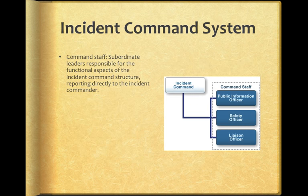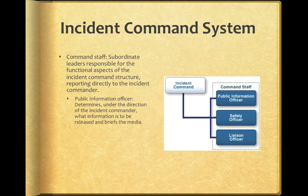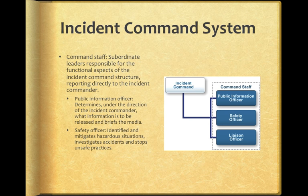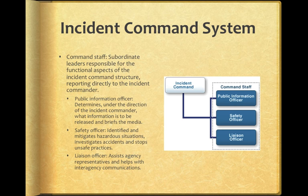A command staff exists in this system, where subordinate leaders are responsible for the functional aspects of the incident command structure, reporting directly to the incident commander. You have a public information officer who determines what information is to be released and briefs the media, a safety officer who identifies and mitigates hazardous situations, investigates accidents, and stops unsafe practices, and a liaison officer who assists agency representatives and helps with interagency communications.